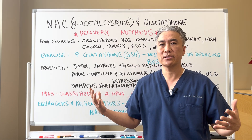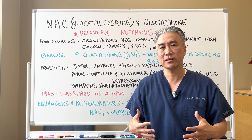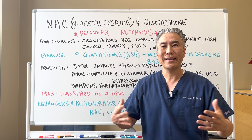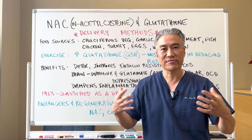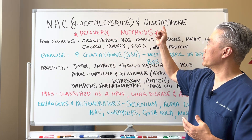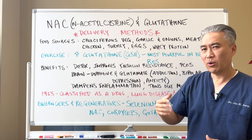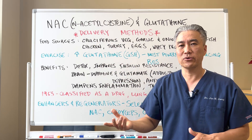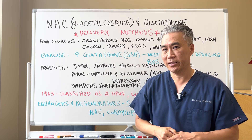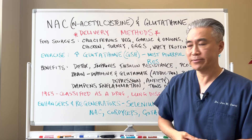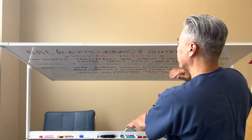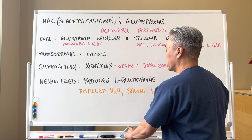Glutathione is the most important and most powerful antioxidant in our body. It takes the blow of oxidative stress. NAC is the precursor to glutathione. I'll link those videos below so you can watch them and get a better understanding of what NAC and glutathione do. Now let's get into delivery methods.